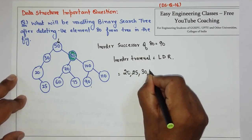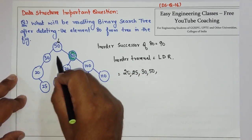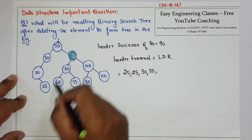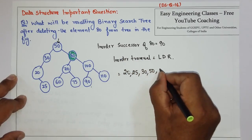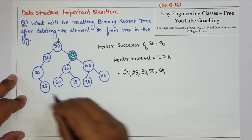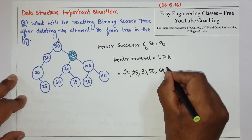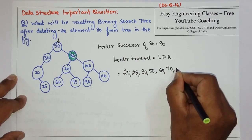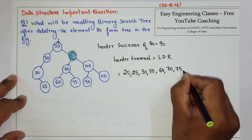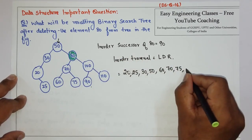50, and then we will come to this part and go to the left part. So 60, then 70, 75, and we come to the node which is 80.